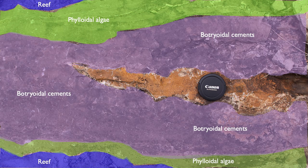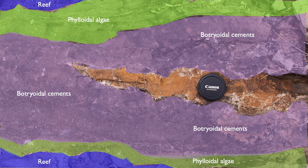The second thing is botryoidal cement. What's fascinating is that if you look closely at that botryoidal cement, you see growth of the botryoidal cement interrupted by growth of phylloidal algae. This is really an early marine process - the algae was still living there and would colonize the surface of the mineral, so botryoidal cement would stop growing, leaving just a thin layer of algae, then one more layer of botryoidal cement.